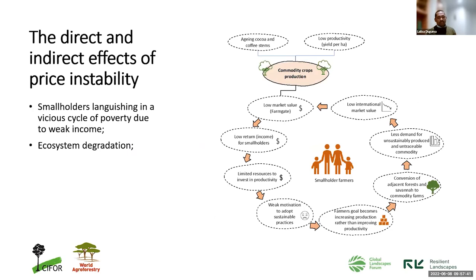Overall, we have issues with aging of the cocoa and coffee stems and low productivity. This chain of issues puts smallholder farmers in a vicious cycle of poverty they can't get out of. Their returns due to poor productivity are low, and because they expand to increase production, the products are often labeled as unsustainably produced, which gives them a low market price. They receive a small share of what they've produced and are always in that loop, unable to get out by themselves.